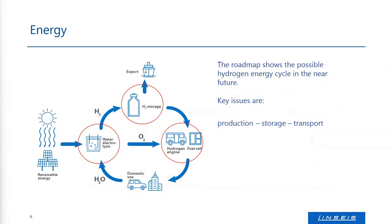For example, hydrogen production can be done with photovoltaic. Photovoltaic modules are more or less semiconductors, and some of our devices can measure useful data for semiconductors. Also, storage of hydrogen is a big issue. It can be done with sorption materials, and sorption processes can be analyzed with thermo-gravimetric analysis, while the energies involved can be measured with calorimeters.